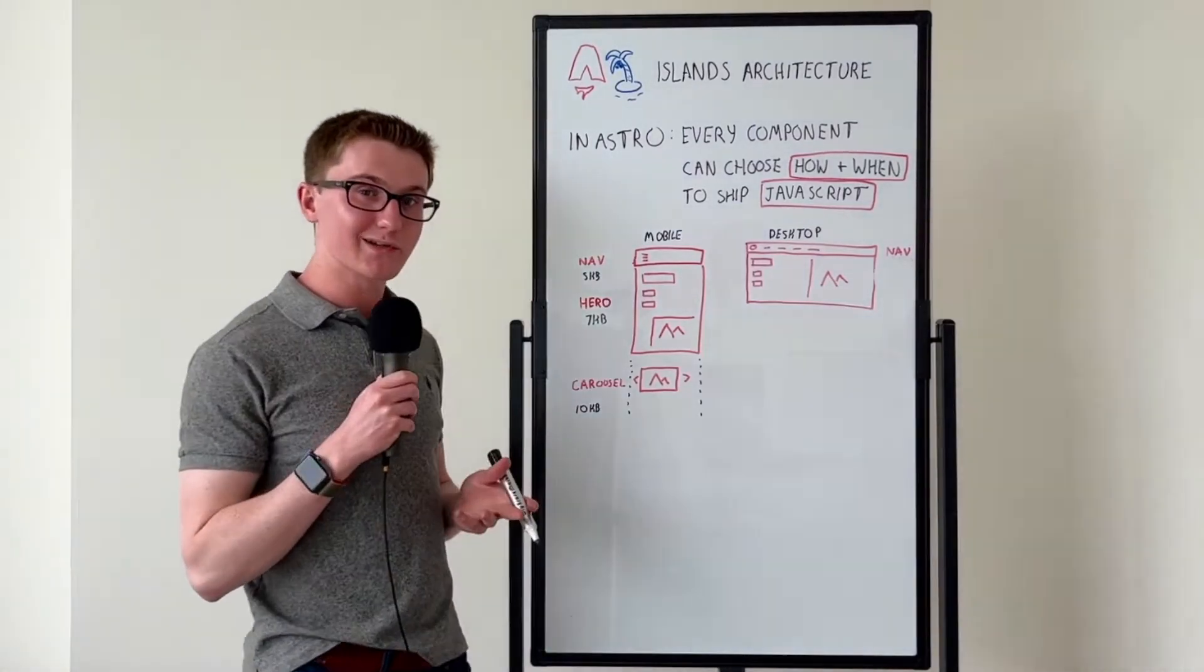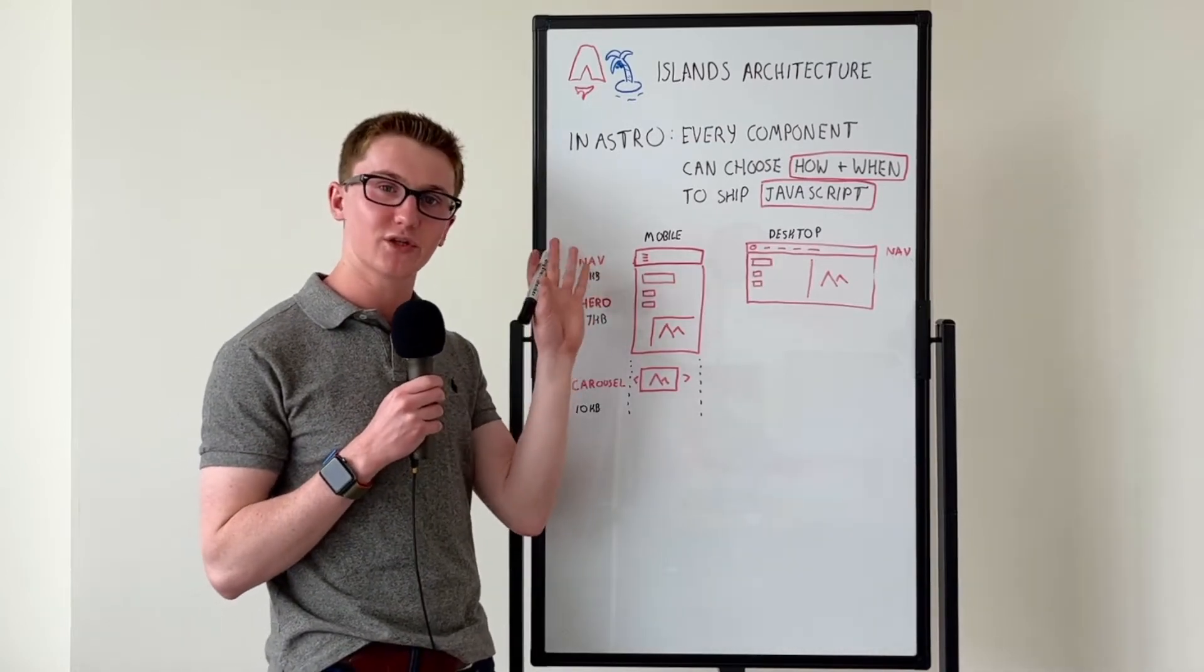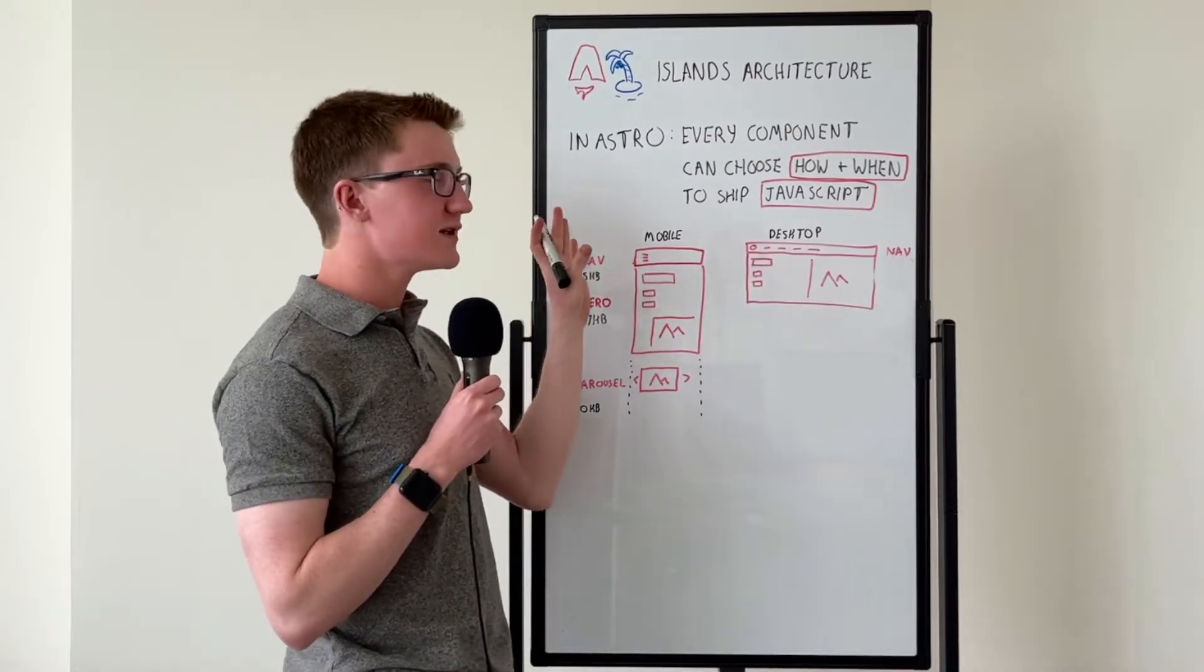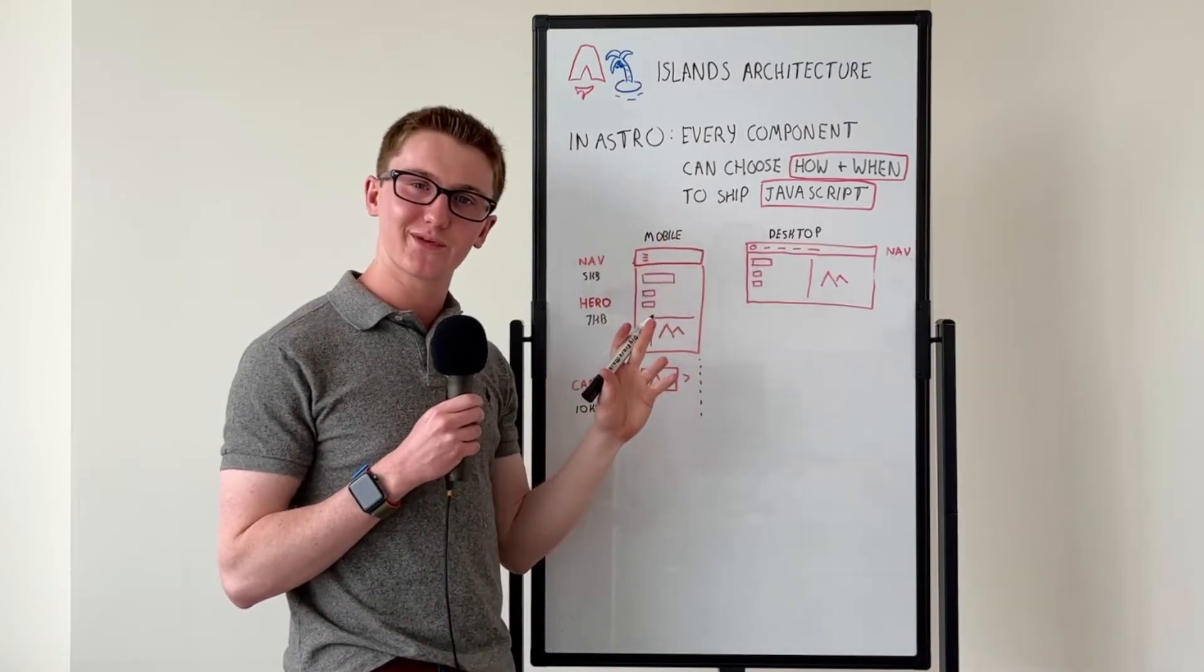So what's this islands architecture that Astro keeps talking about? To give a basic definition, in the framework an island is just a component where you can choose how and when to ship client-side JavaScript.